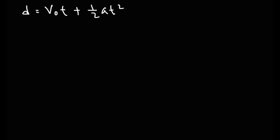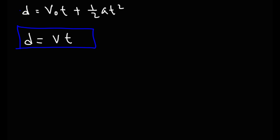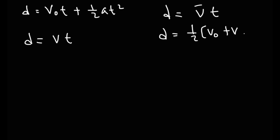Another kinematic formula is: displacement equals v-initial times t plus one-half a t-squared. The v-initial times t portion comes from d equals vt — since velocity is displacement over time, multiplying both sides by time gives displacement equals velocity times time. This equation works for constant velocity. For constant acceleration, you use the average velocity instead of v, where the average velocity equals the sum of the initial and final velocity divided by two.